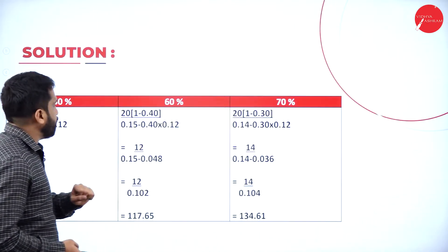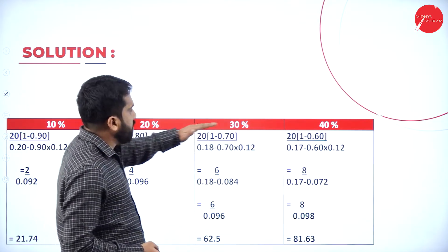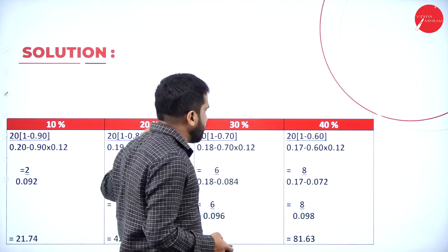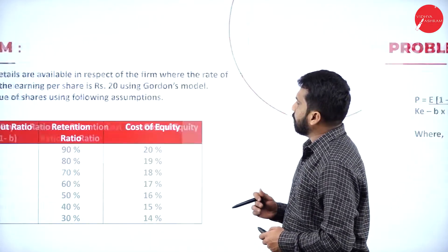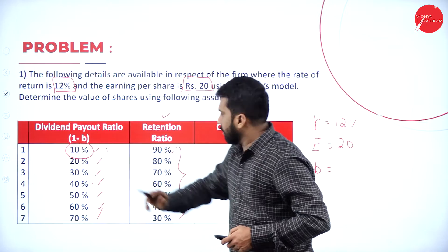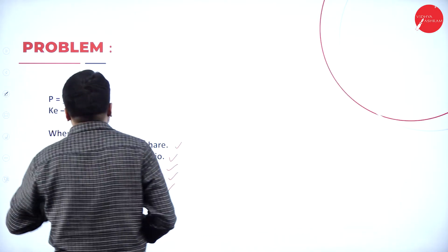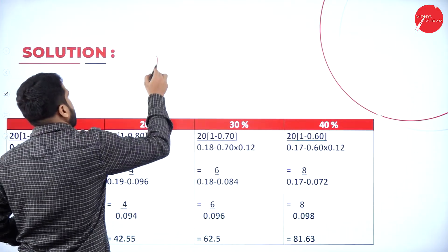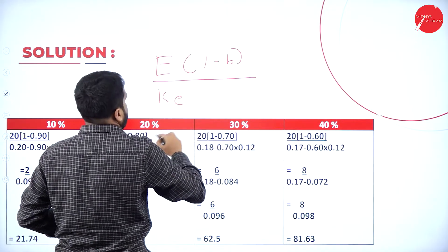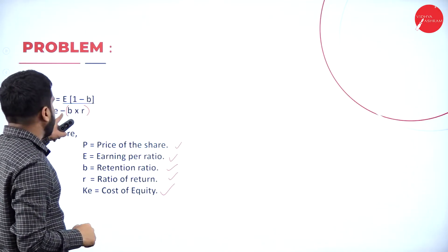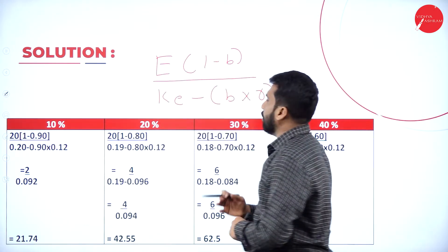Coming to the first case: dividend payout is 10%, so retention B is 90%. Cost of equity is 20%. The formula is P = E(1 − B) / (Ke − B × r). Substituting: E = 20, B = 0.90, Ke = 0.20, r = 0.12. So P = 20(1 − 0.90) / (0.20 − 0.90 × 0.12).